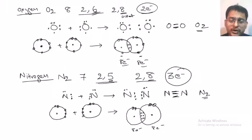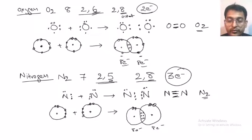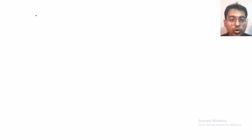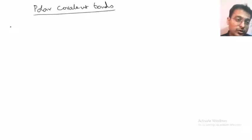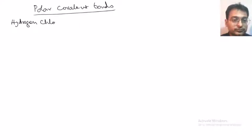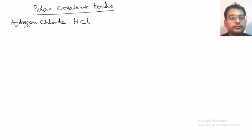These were all examples of non-polar covalent bonds. Next we will be looking at polar covalent bonds. Examples include hydrogen chloride, HCl.